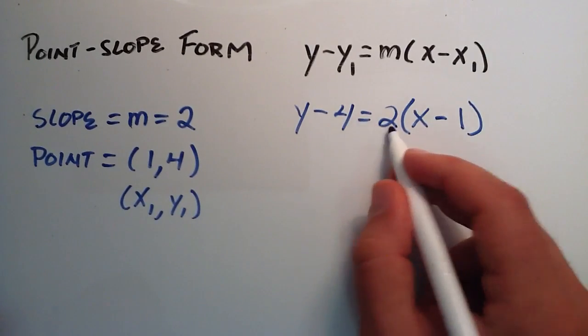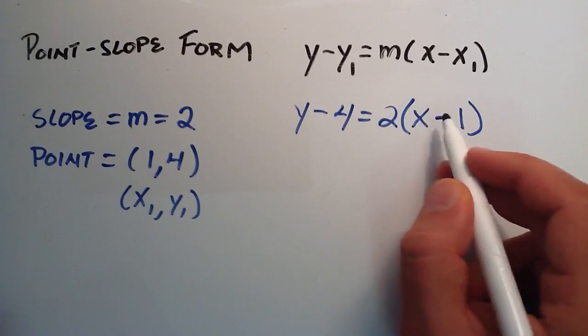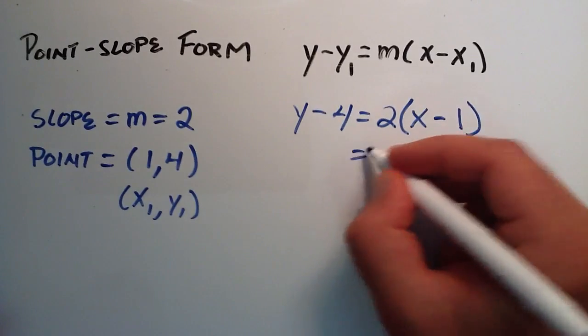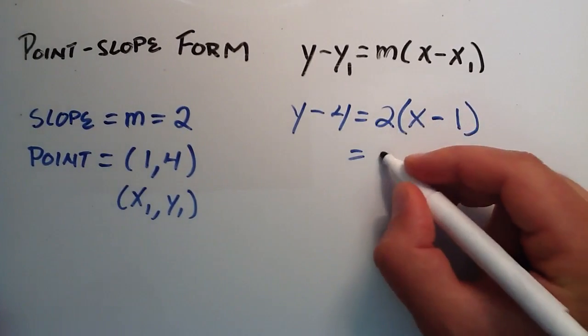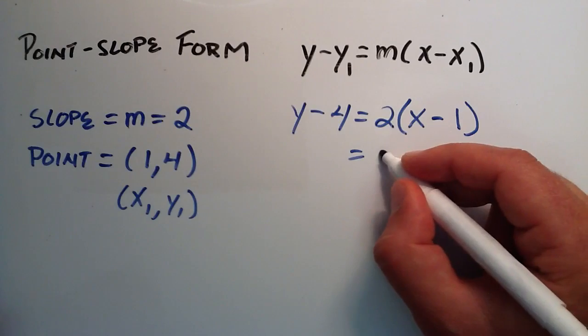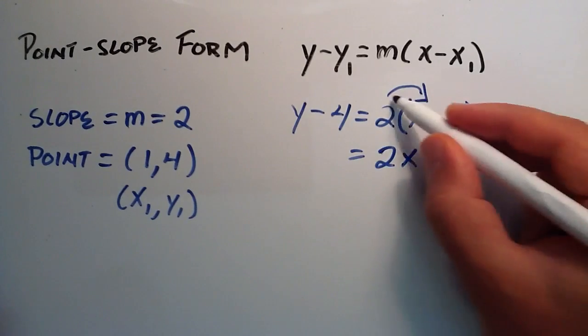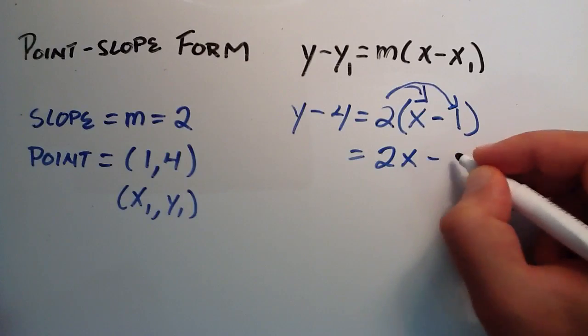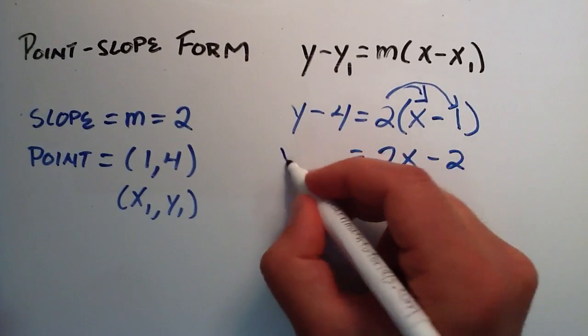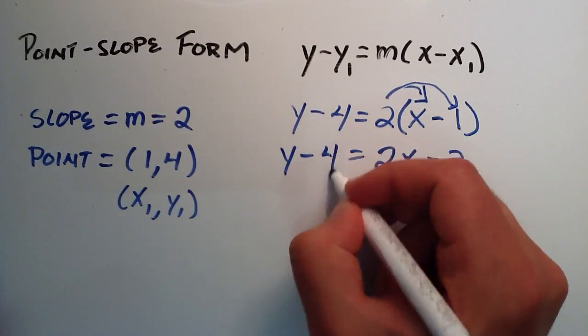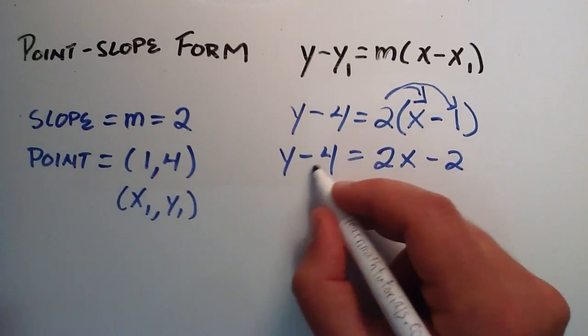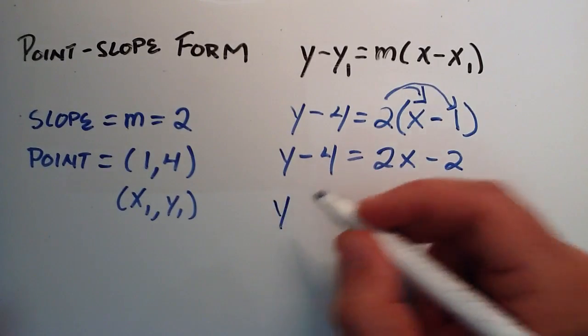So then all we need to do is distribute the 2 into the parentheses. So 2 times x gives us 2x, and 2 times negative 1 gives us negative 2, and that's equal to the left-hand side, which is y minus 4. And to get rid of this minus 4, we add 4 to each side.